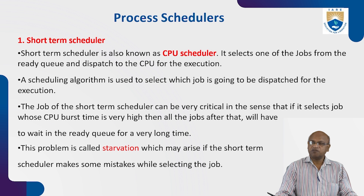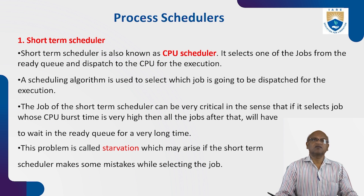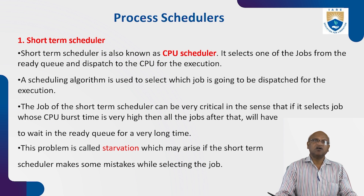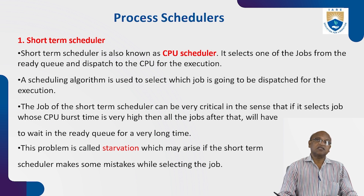We cannot send all instructions to the CPU at the same time; they must be sent in an orderly manner. The CPU is responsible for executing the program, so instructions are sent one by one. The job of the short-term scheduler can be very critical — if it selects a job whose CPU burst time is very high, then all subsequent jobs will have to wait in the ready queue for a long time.